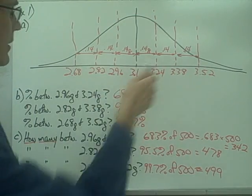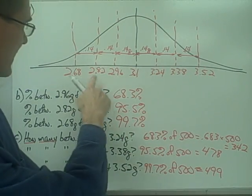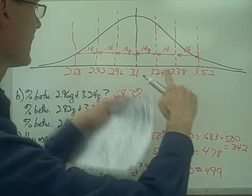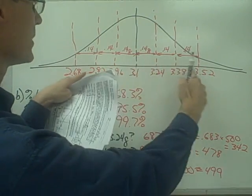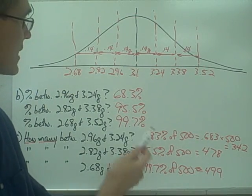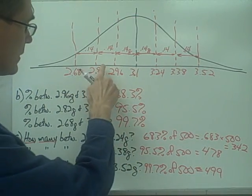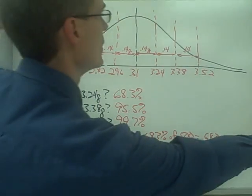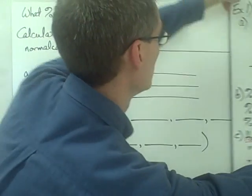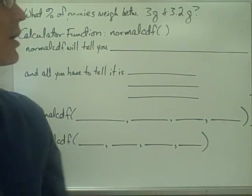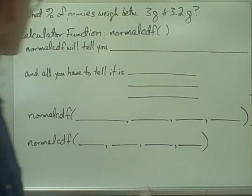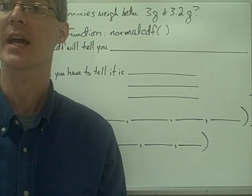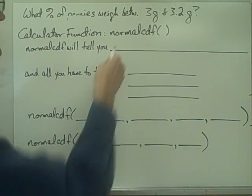Now, the empirical rule only helps if you care about data points within whole numbers of standard deviations. But what if you wanted to know how many pennies lie between some other two points? You can't solve that just using the empirical rule. Instead, we're going to use a calculator function on the TI-83 and TI-84 calculators called Normal CDF.